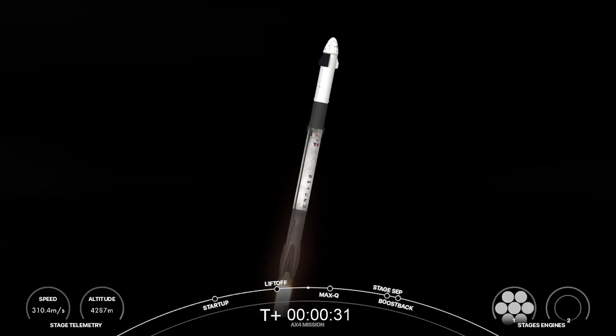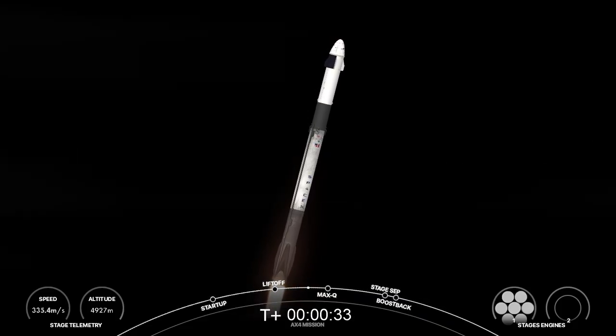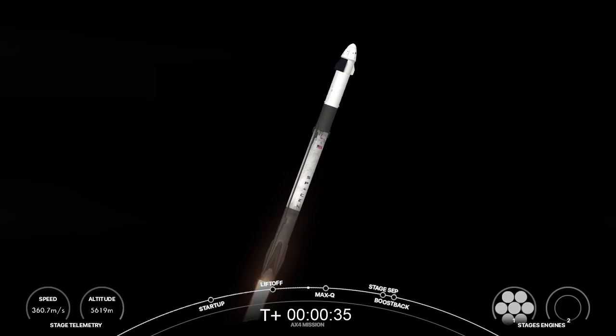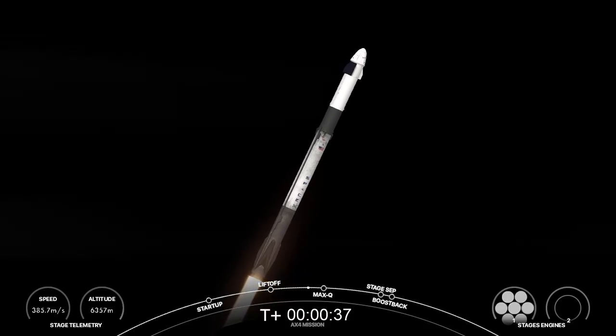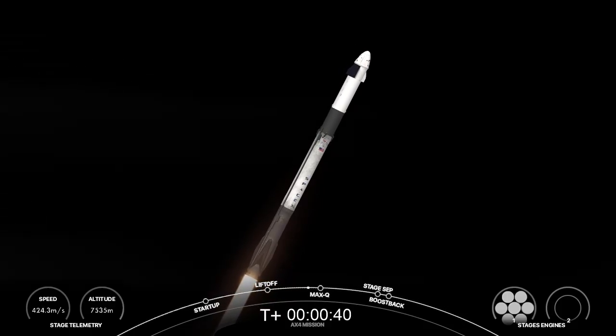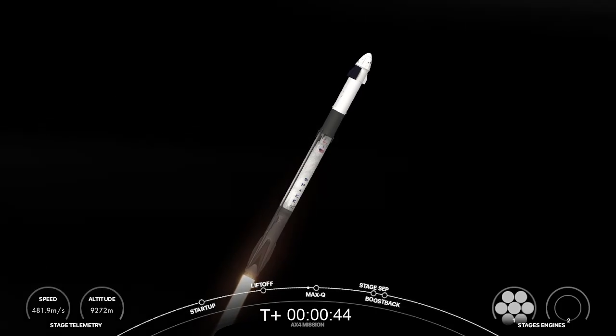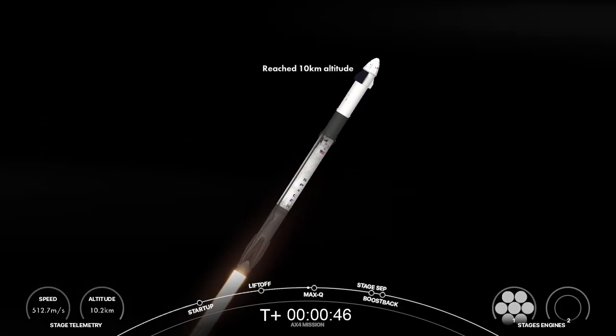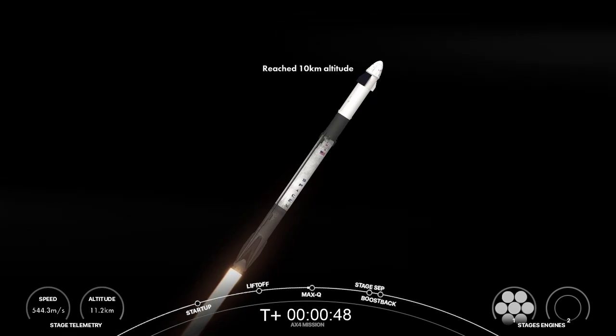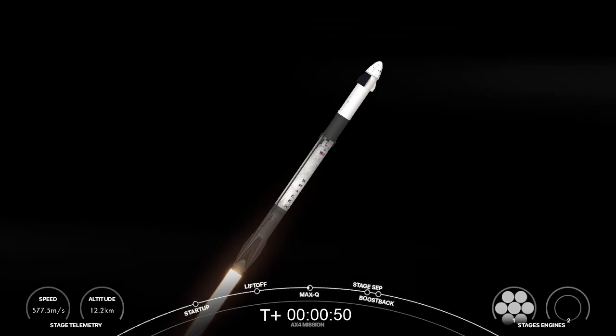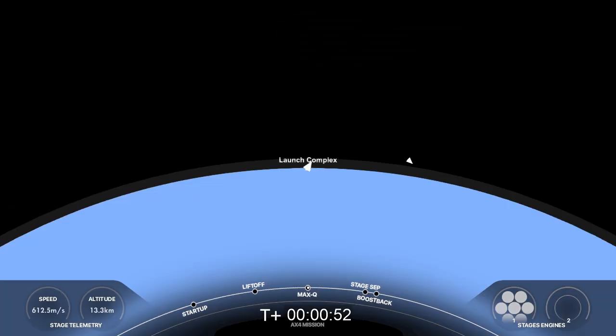Two plus thirty seconds into flight with the Axiom 4 crew on board Dragon headed to the International Space Station, waiting to hear call-outs from the Falcon 9 engineering team. Power and telemetry nominal. Stage one throttle. We're throttling down the nine Merlin engines. We're into the throttle bucket preparing for Max-Q. Max-Q.